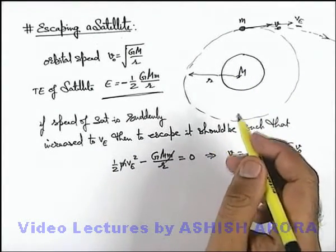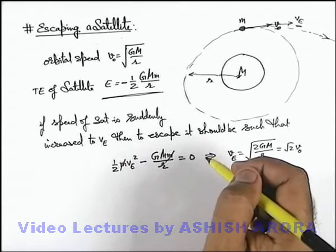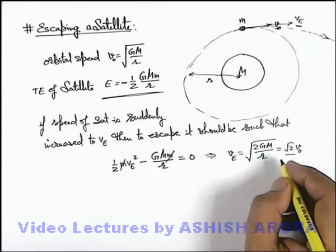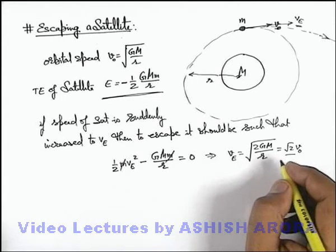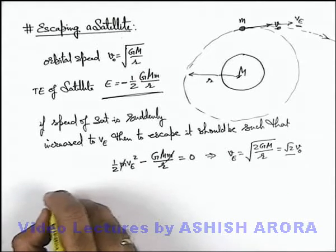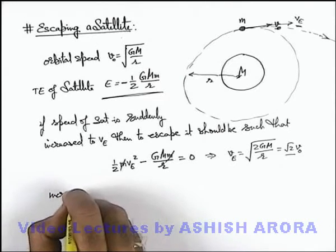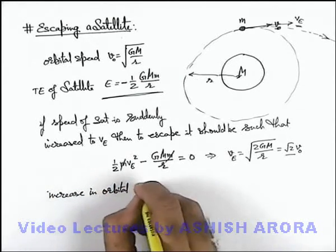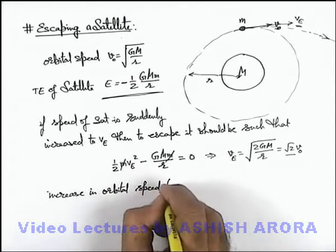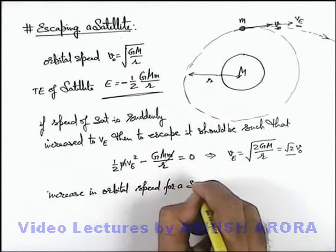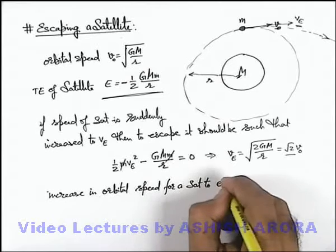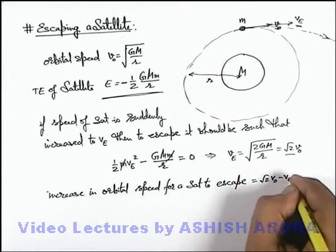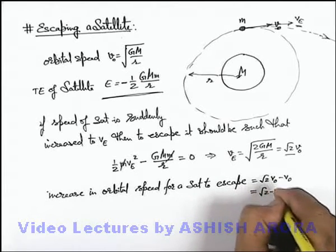So we can simply say by impulse, if its orbital speed is changed to root 2 times, it'll escape. And here we can see the change in speed. If we calculate the increase in orbital speed for a satellite to escape, then it can be written as root 2 v_not minus v_not, this is root 2 minus 1 v_not.